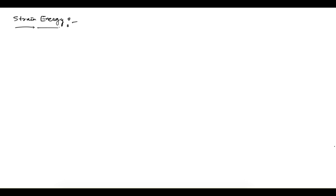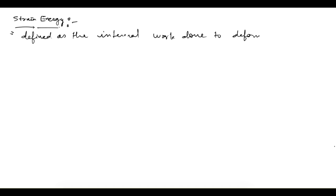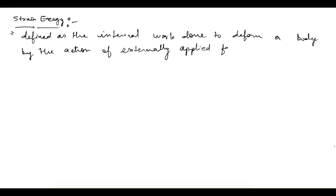Hello everyone. Last time we were discussing the properties of the material. To understand the next property, let's first understand strain energy. So let's write the definition: strain energy is defined as the internal work done to deform a body by the action of externally applied forces. According to this definition, strain energy is the internal work done to deform a body.